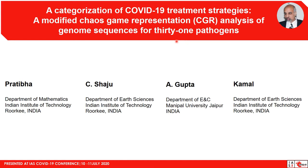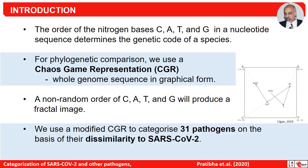We categorized 31 different pathogens based on their proximity to the COVID-19 virus. We use a novel method called chaos game representation, modified to carry out phylogenetic comparison. CGR images are obtained by playing a chaotic game on a square whose vertices correspond to adenine, cytosine, guanine, and thymine. We begin anywhere in the square and move halfway toward a vertex depending on the letter occurrence in the genomic sequence, repeating this for each letter symbol as it appears in the genome.